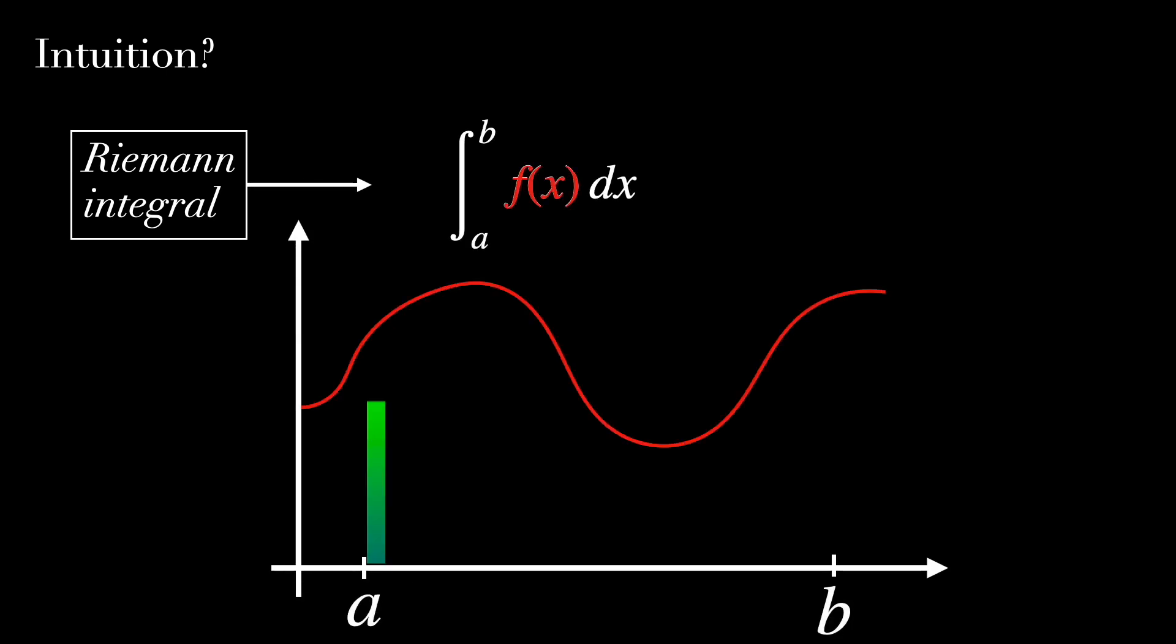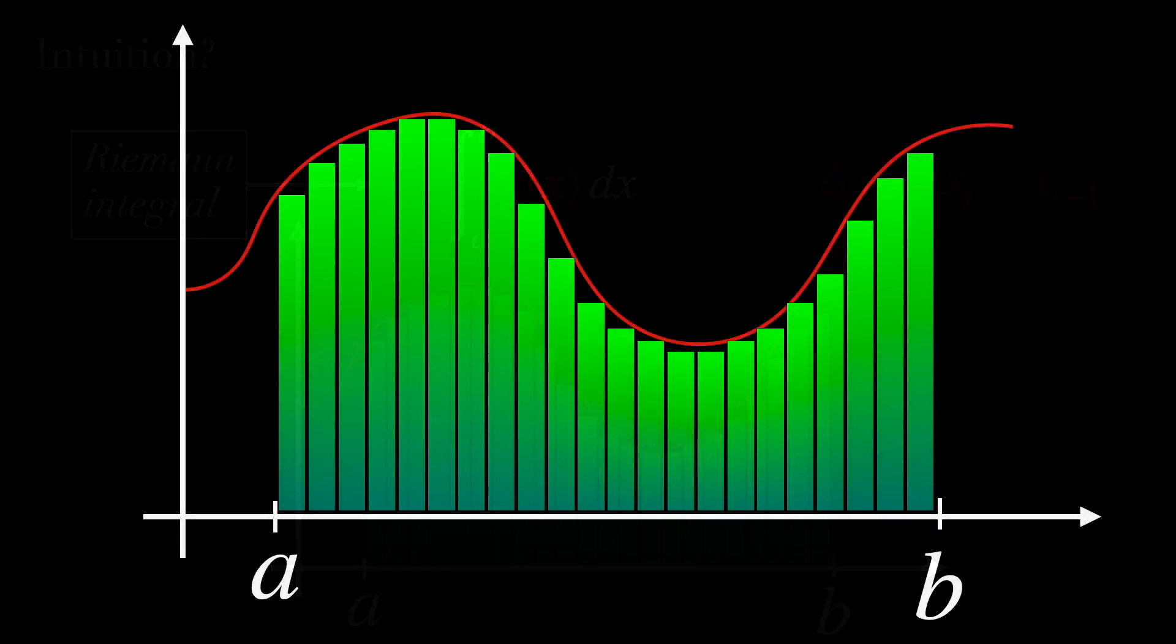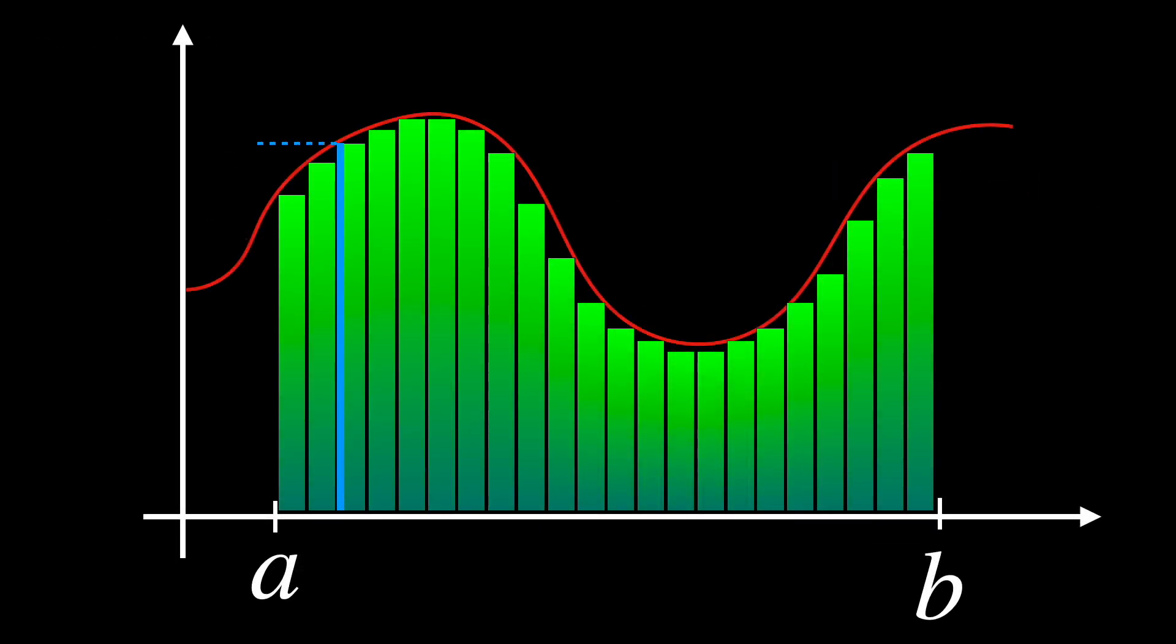What is the intuition behind the Riemann-Stieltjes integral? In the classical Riemann integral, the increments represent small changes in x. And these are multiplied by the function's height, f, evaluated at a sample point ξᵢ in the subinterval [xᵢ₋₁, xᵢ].